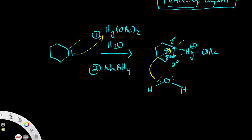The nucleophilic attack occurs with anti-addition. We didn't come in from the syn side because the bridge takes up a lot of space and sterically hinders the nucleophile from that direction. As a consequence, the nucleophile comes in from the opposite side of the bridge, giving anti-addition and therefore stereospecificity.